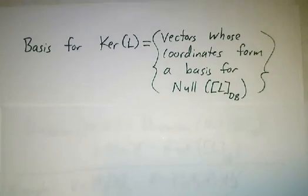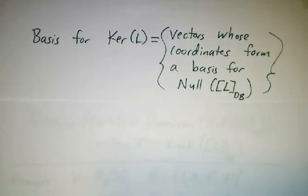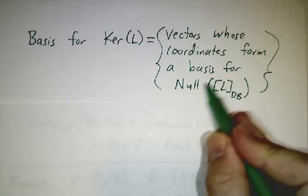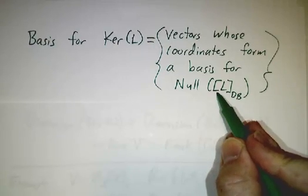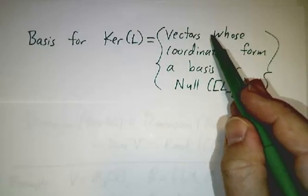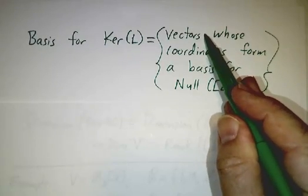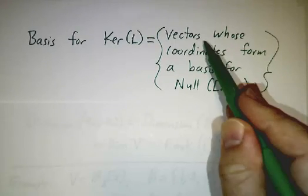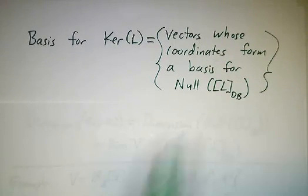And what that means is that we can get a basis for the kernel by first writing down the matrix and finding a basis for the null space. And the corresponding vectors in V—the basis for the null space, these are vectors in Rⁿ—the corresponding vectors in V give you a basis for the kernel.